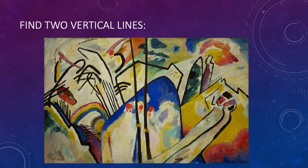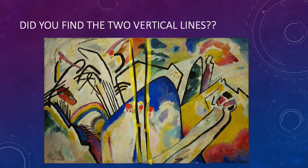Find two vertical lines in this painting by Kandinsky. Did you find the vertical lines? I highlighted them in yellow so you could find them easier. Vertical lines go straight up and down. And even though Kandinsky doesn't do anything perfectly, they are still fairly vertical. Pretty cool!